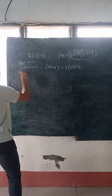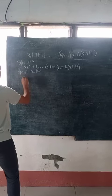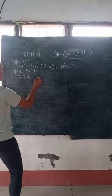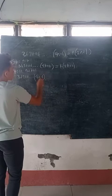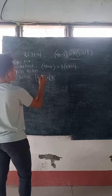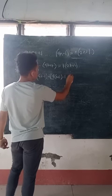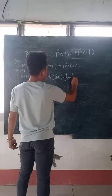So for k plus 1, it will be 3 plus 7 plus 11 plus that term 4k minus 1, plus the next term which is 4 times k plus 1 minus 1. So we substitute our n as k plus 1 on the right side: k times 2 times k plus 1 plus 1.